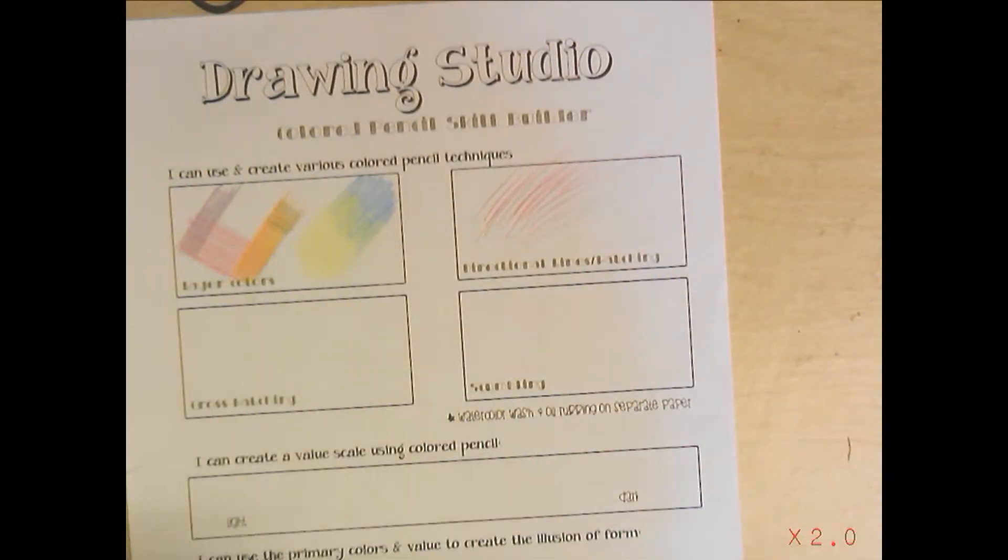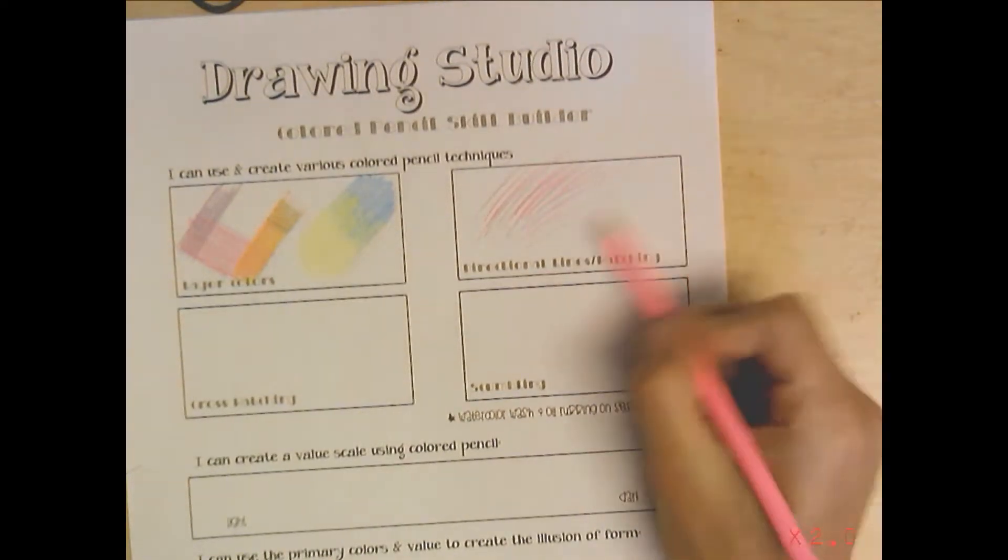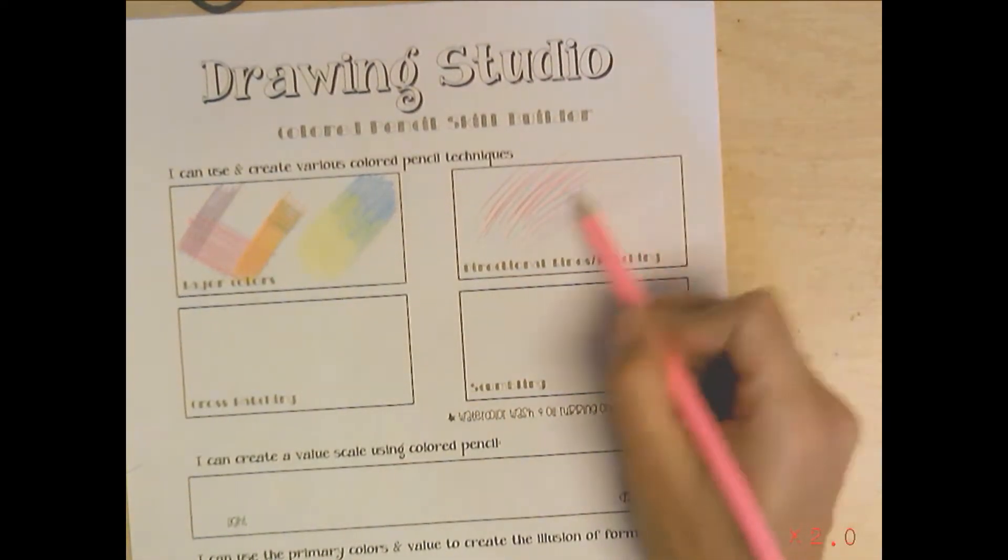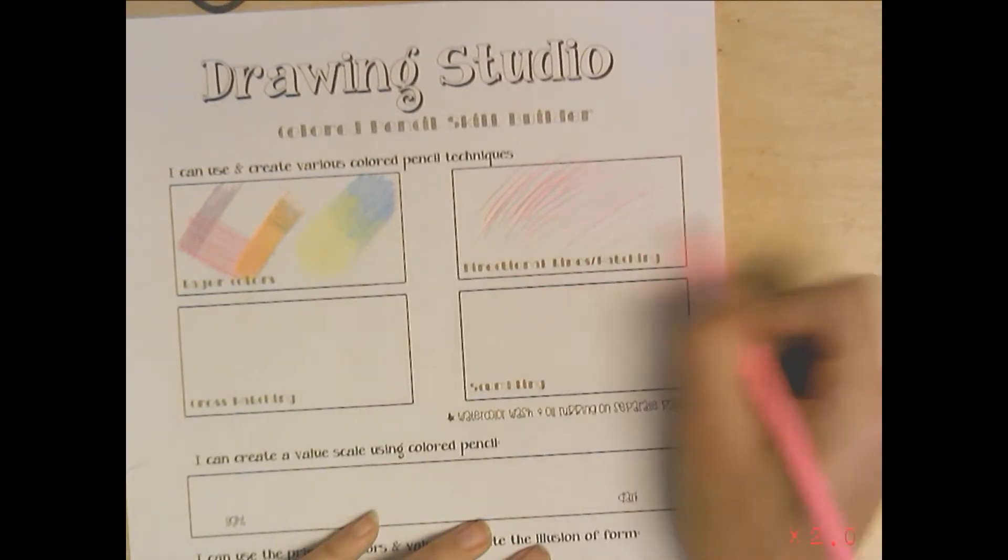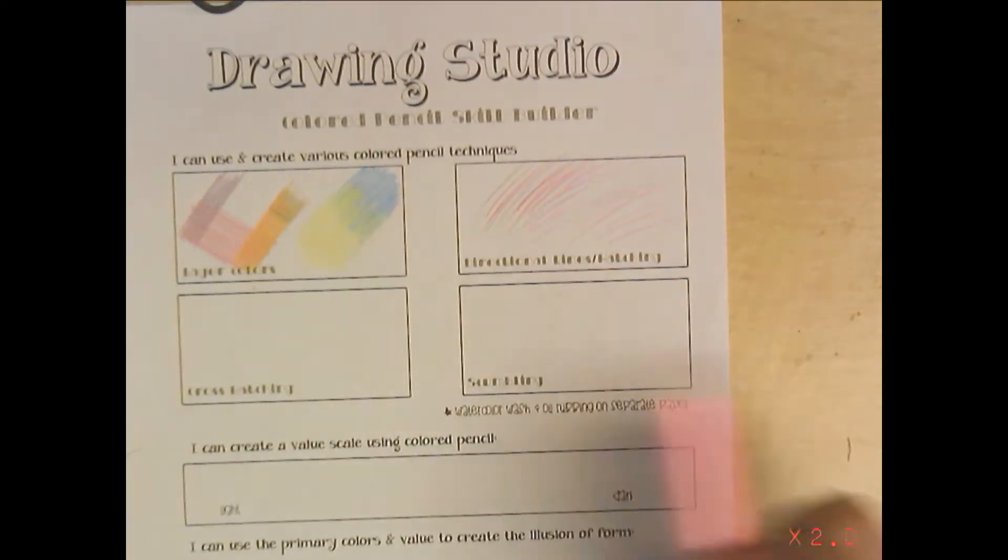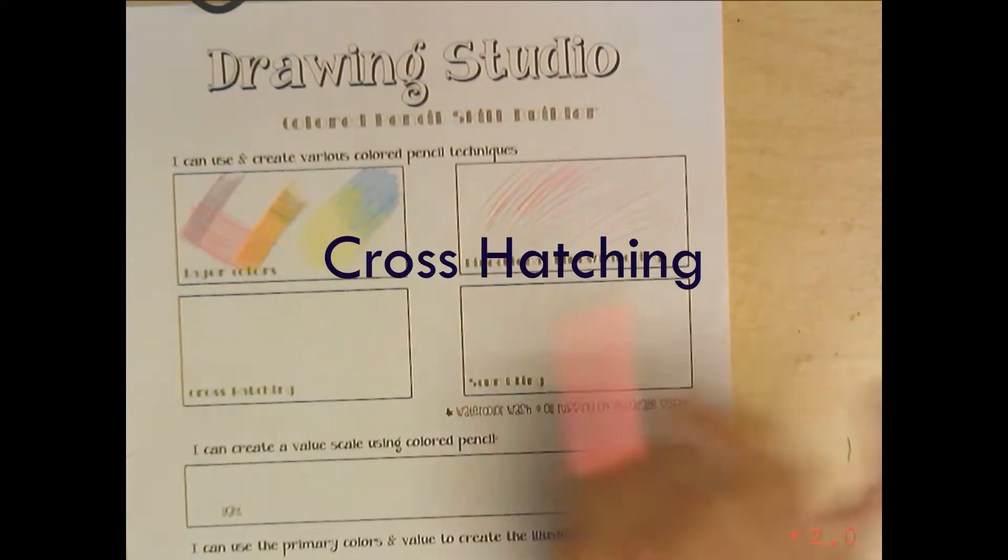This might be a good way if you really want to try and tackle drawing hair. It's just taking a stroke going one direction over and over and over again. That is directional lines or hatching.